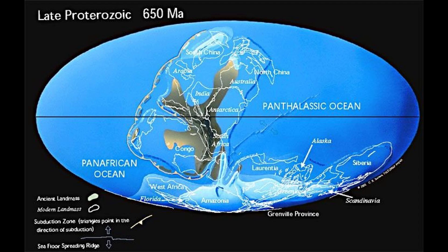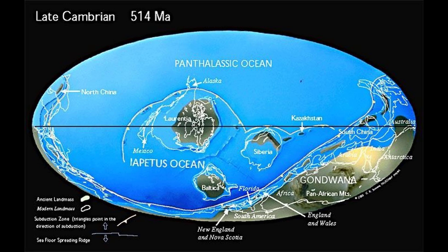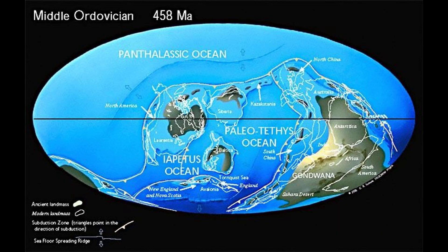This map illustrates the breakup of the supercontinent Rodinia, which formed 1,100 million years ago. The continents were flooded by shallow seas. The supercontinent of Gondwana had just formed and was located near the South Pole. The end of the Ordovician was one of the coldest times in Earth history, and ice covered much of the southern region of Gondwana.